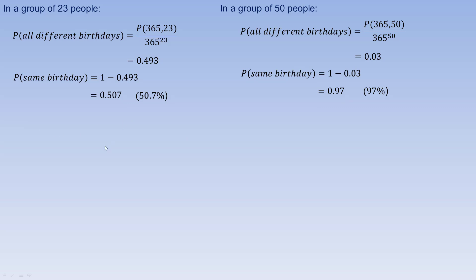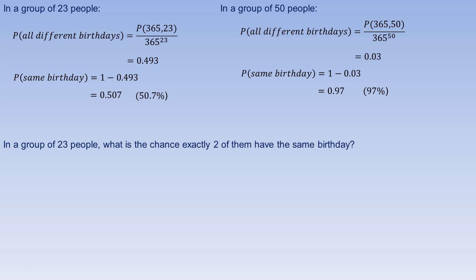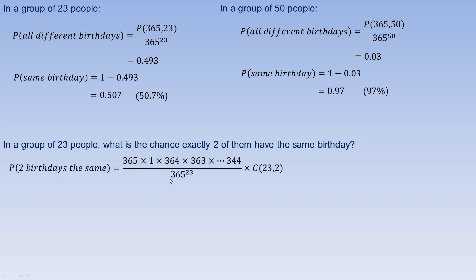Now let's look at some other versions of the birthday problem. With the same group of 23 people, what is the chance that exactly 2 of them have the same birthday — 2 specific people, not just any 2? The probability that these 2 specific people share a birthday: the first person could have any one of the 365 birthdays, and then the next person has the same one. Then the other people all have different birthdays, so there are 364 ways for the next person, 363 for the next, and so on.